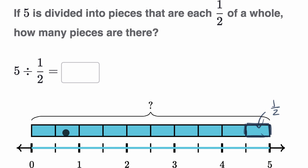Well, two halves make a whole, and we have five wholes, so it's going to be five times two, or 10.